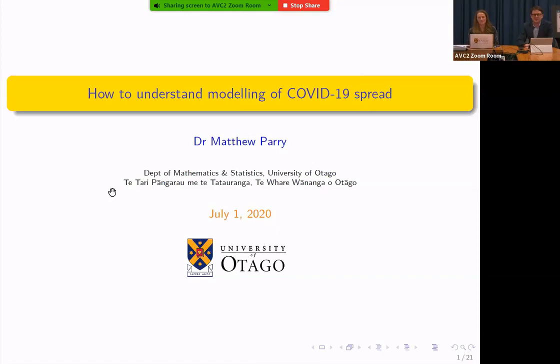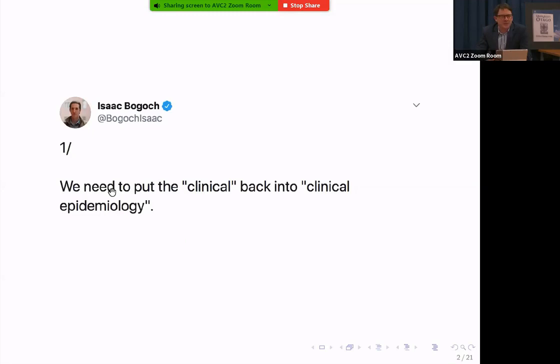Thanks very much, Jackie. And thank you very much to the organizers for letting me talk to you today about understanding modeling of COVID-19 spread. I know you'll be a bit alarmed that a mathematician or statistician is talking about this area. So I thought I'd lead up front with a quote from Isaac Bogosh, who's an epidemiologist in Canada. He said we need to put the clinical back into clinical epidemiology. So this is just to reassure you that I'm not going off in some high-in-the-sky mathematical framework just for the sake of it, but we really are trying to address real epidemiological questions. Now I should point out that Isaac Bogosh was one of the first people to actually point out that COVID-19 was a serious threat with pandemic potential very early on.